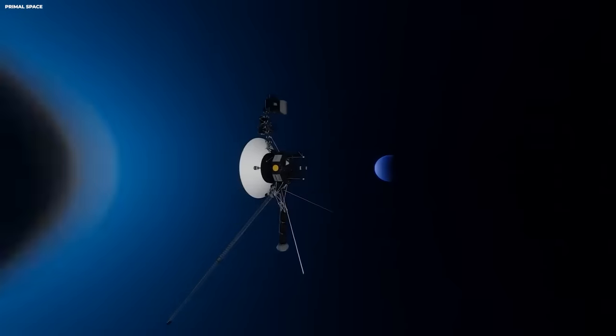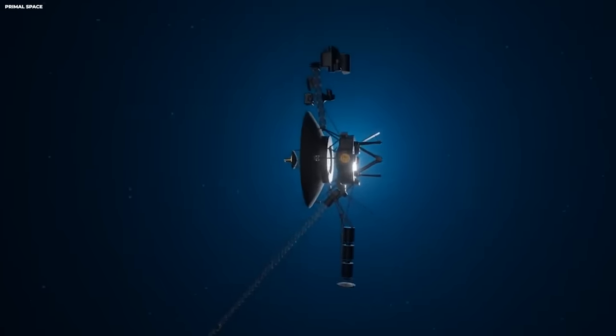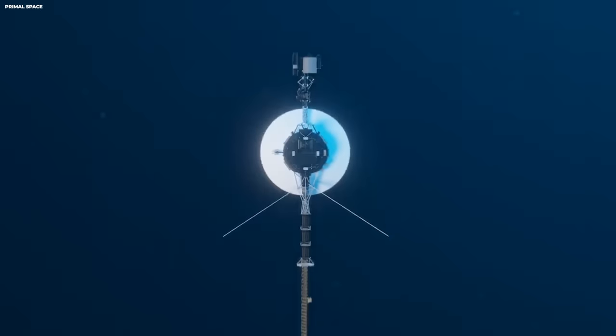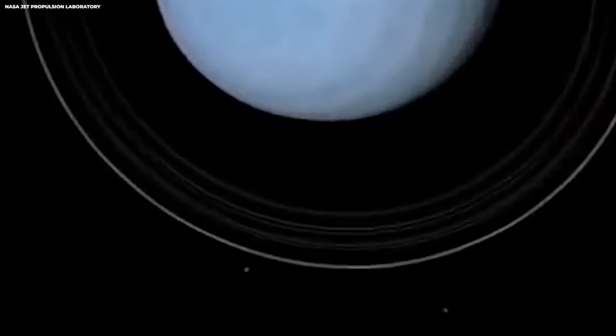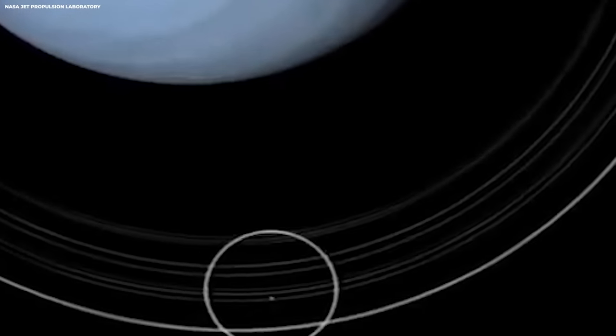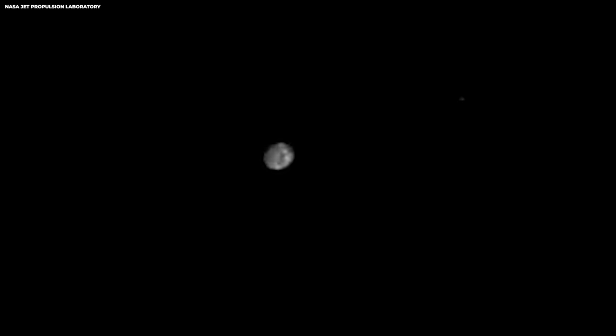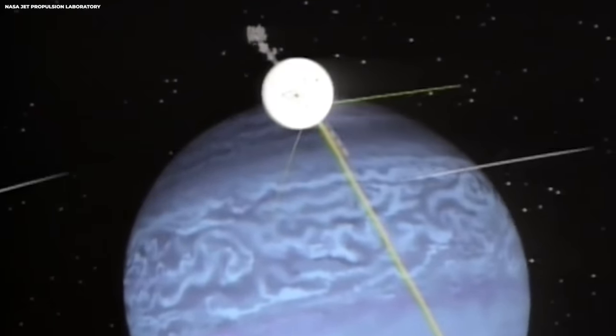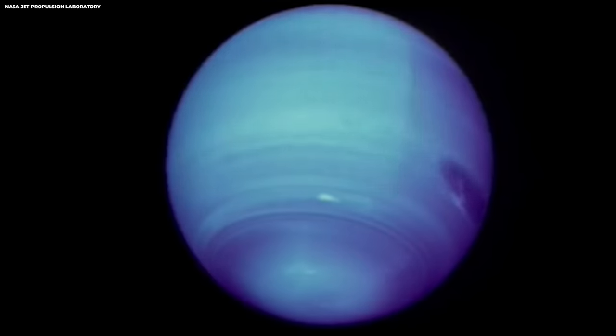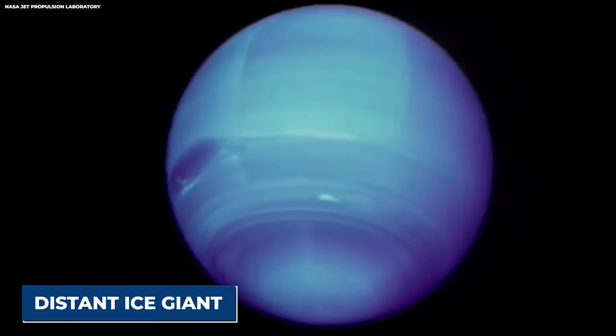Voyager 2, on the other hand, embarked on a series of adventures that brought it to the outermost planets of the solar system. In 1986, it made a historic flyby of Uranus, where it discovered 10 previously unknown moons, increasing the planet's moon count. Three years later, Voyager 2 reached Neptune, revealing the remarkable features of this distant ice giant.